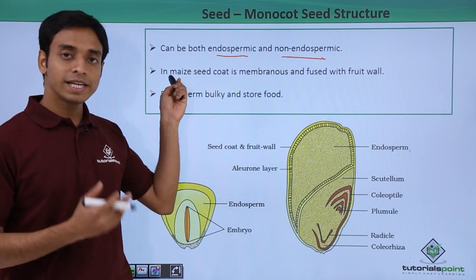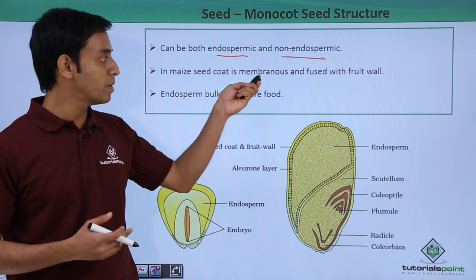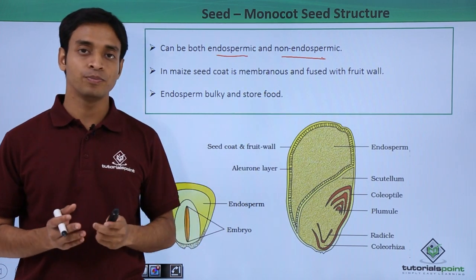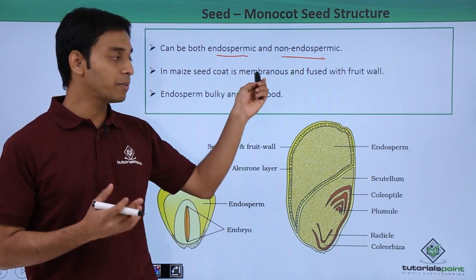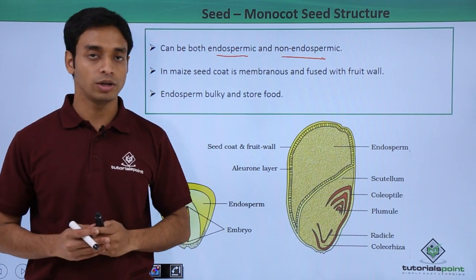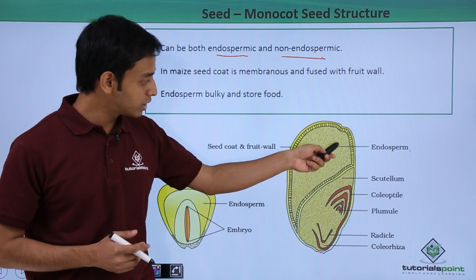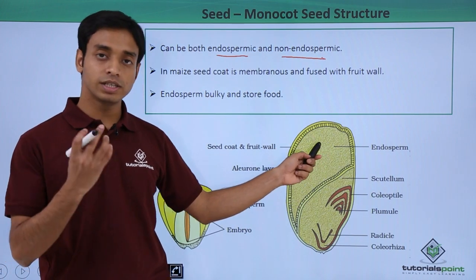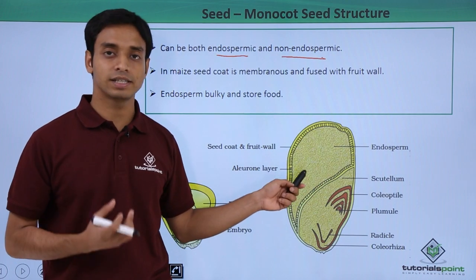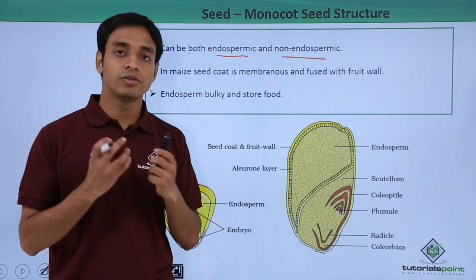In seeds like maize, the seed coat is quite membranous and it is fused with the fruit wall. The endosperm here is bulky and stores food. As you can see, the endosperm is quite large and takes up a lot of space inside the seed.